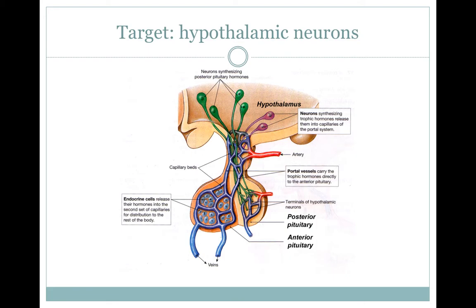As previously mentioned, ecstasy can affect a vast number of areas within the brain, leading to a host of psychological effects. However, its effect on the neurons of the hypothalamus is of particular interest. The hypothalamus synthesizes trophic hormones that either stimulate or inhibit hormone production in the pituitary gland, and it is responsible for maintaining thermal regulation and controlling hunger, thirst, and fatigue, amongst other things.